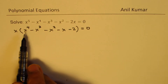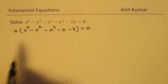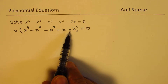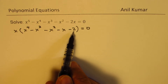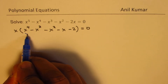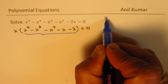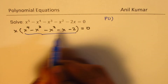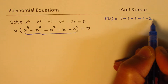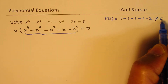Now to factor this quartic equation, we need to try numbers plus or minus 1 or plus or minus 2, and that should give us the factor. If we get 0, then we do have a factor. So let's try the value p of 1. If I substitute 1, I get 1 minus 1 minus 1 minus 1 minus 2, which is definitely not equal to 0.